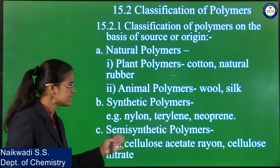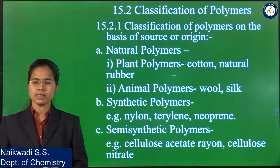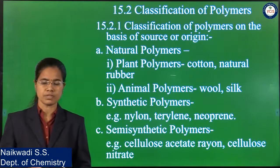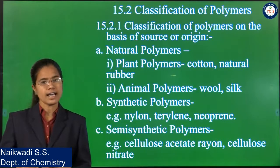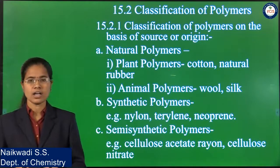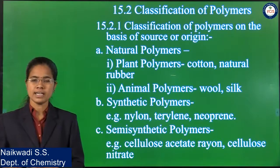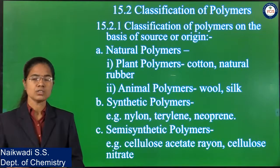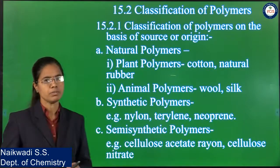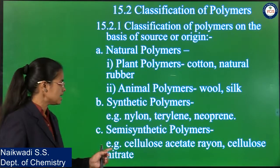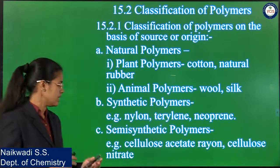The next type is semi-synthetic polymers. Semi-synthetic polymers are actually natural polymers whose properties are enhanced or modified with the help of some chemical reactions. That is why these are known as semi-synthetic polymers. For example, cellulose acetate rayon and cellulose nitrate.